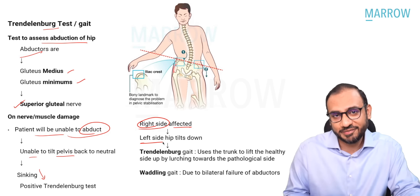Session two, question one: The patient standing on one side has Trendelenburg sign positive. What is the action of the muscle tested in the Trendelenburg test? The options are abduction, flexion, adduction, or internal rotation. The involved muscle is gluteus medius and minimus, predominantly medius. The action of gluteus medius is abduction and internal rotation. So the correct answer is one and four — abduction and internal rotation.